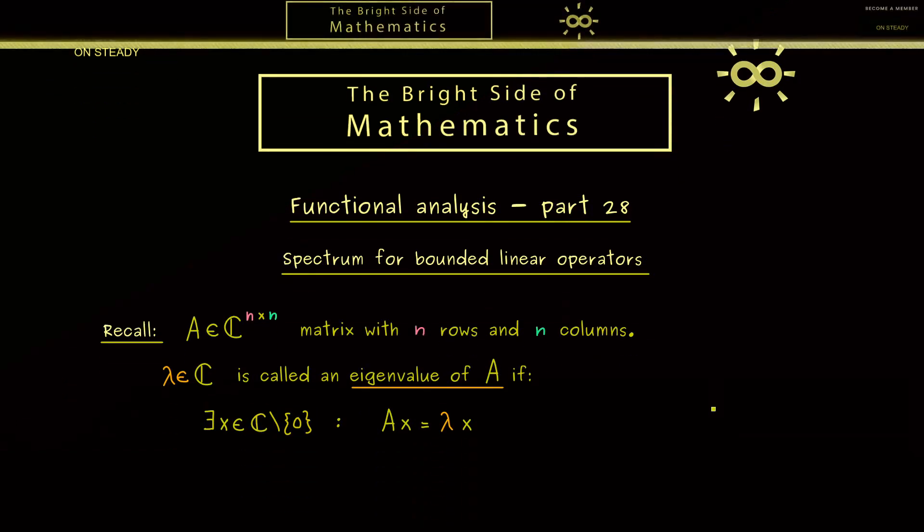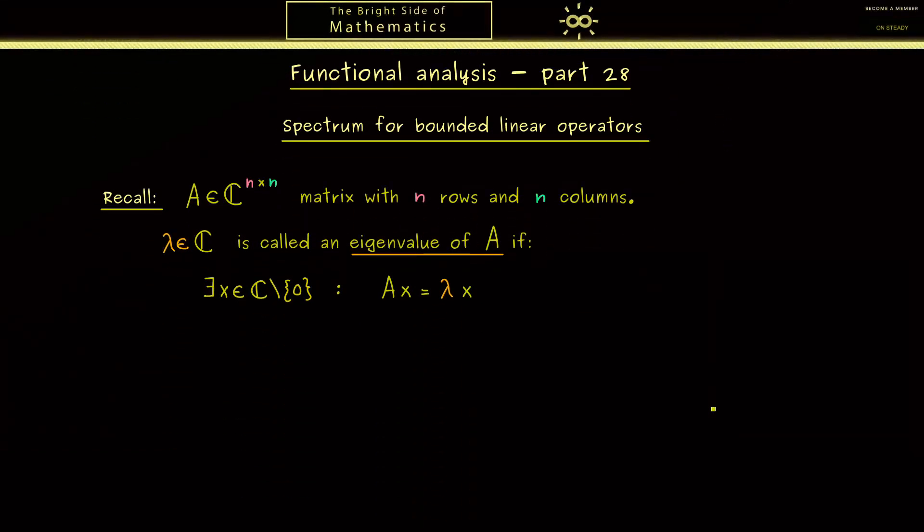At this point it's a good idea to rewrite this equation. For example, we can just bring λx to the left-hand side by using the identity matrix. Now we have a new matrix that sends this vector x to the zero vector.